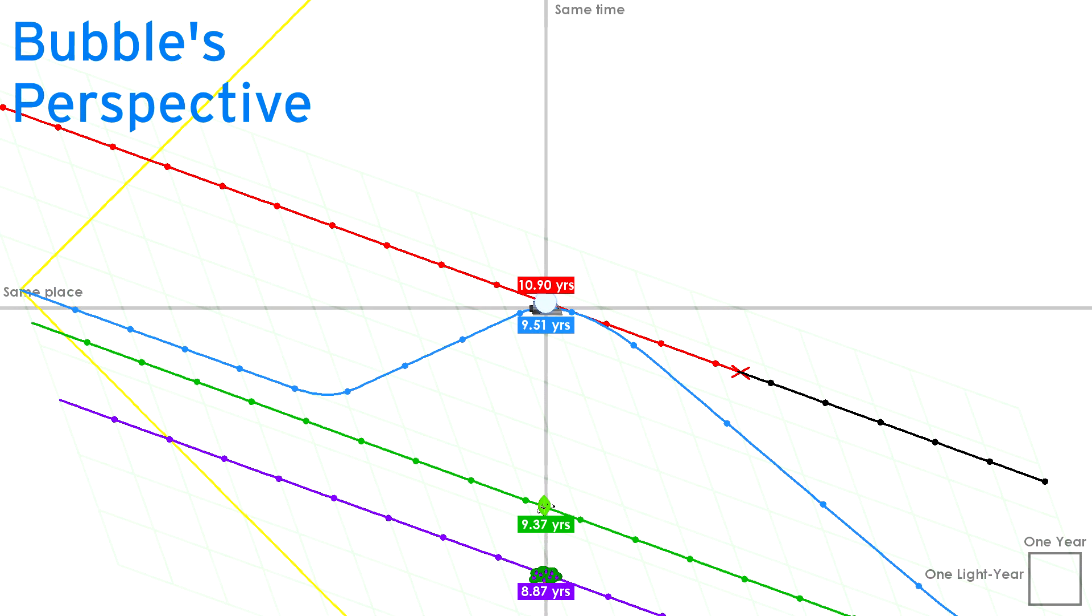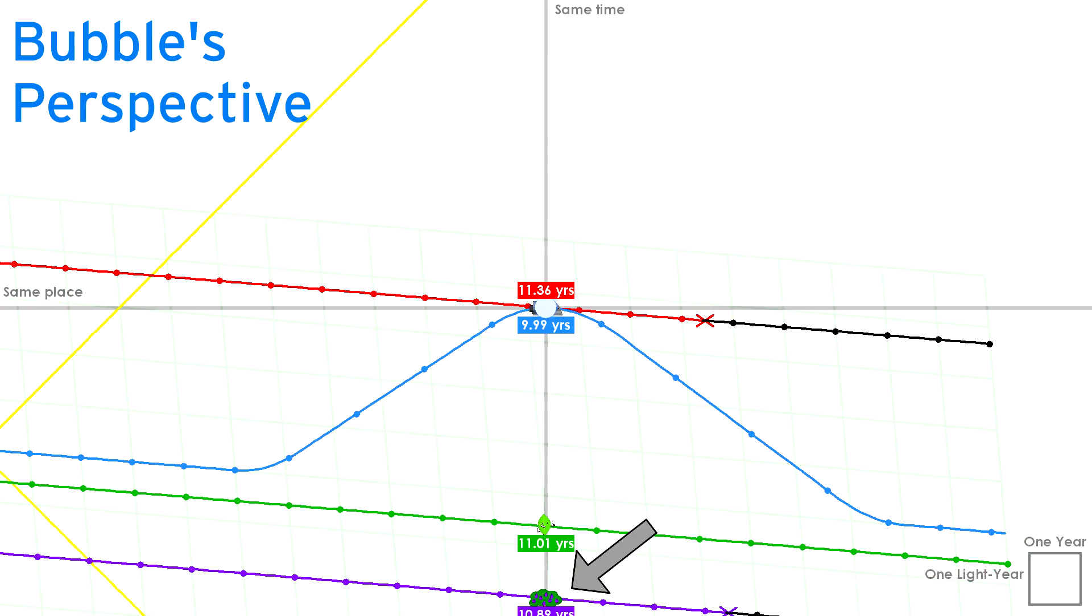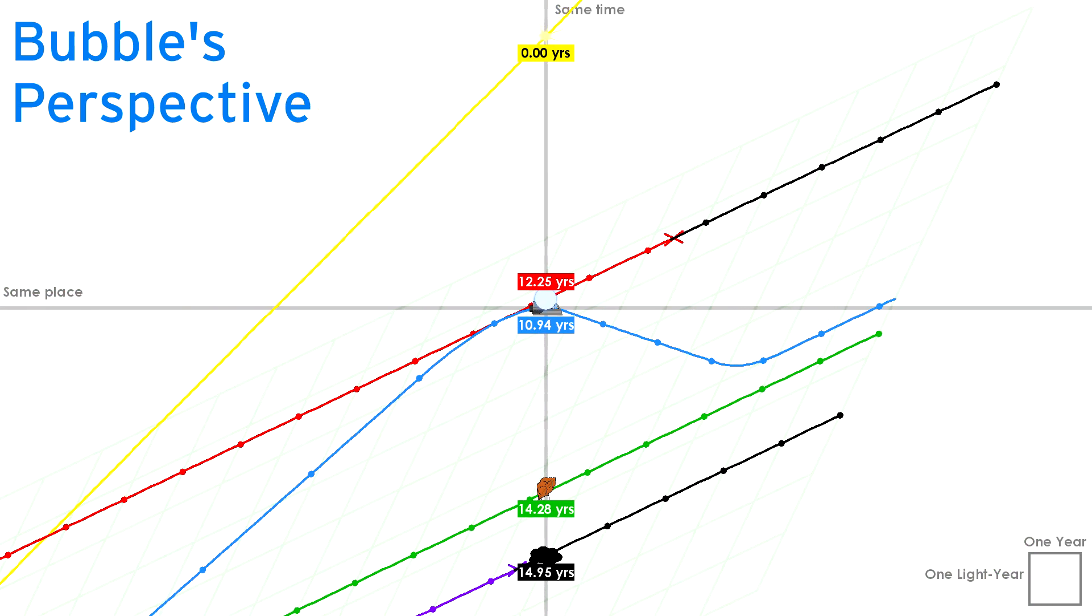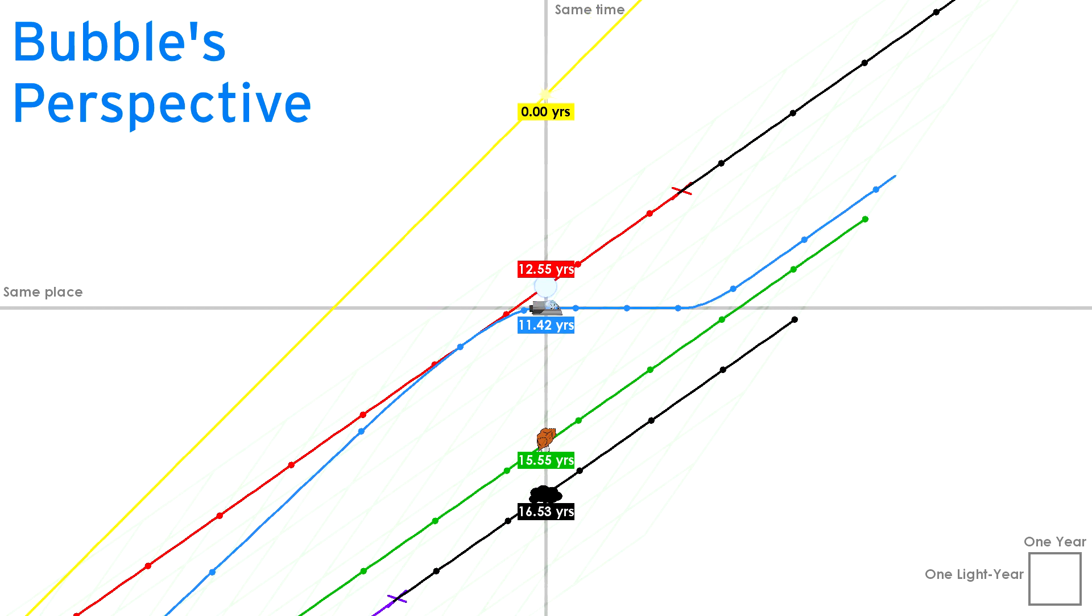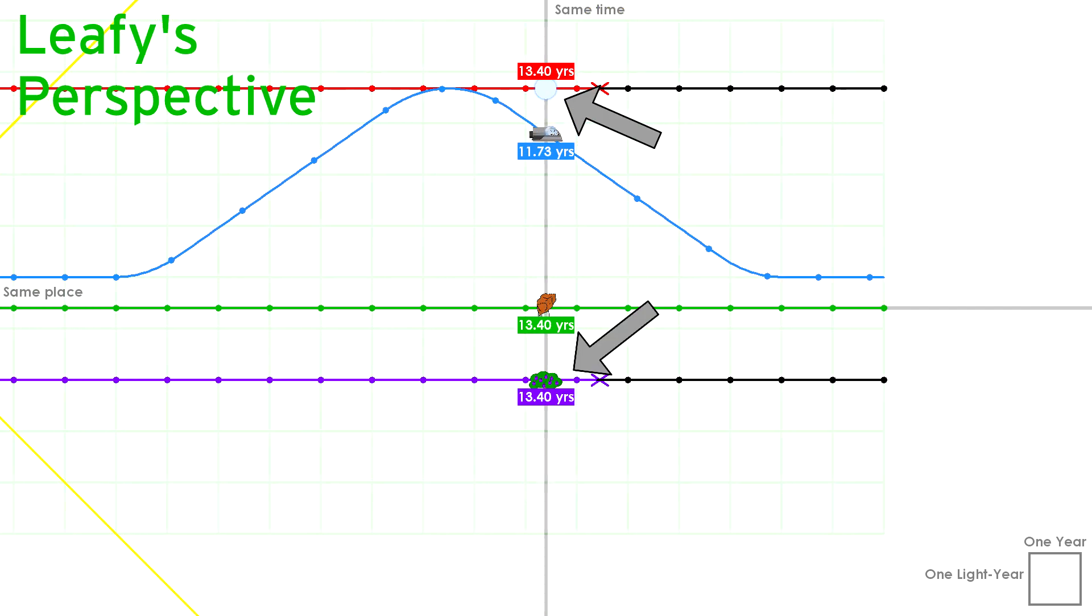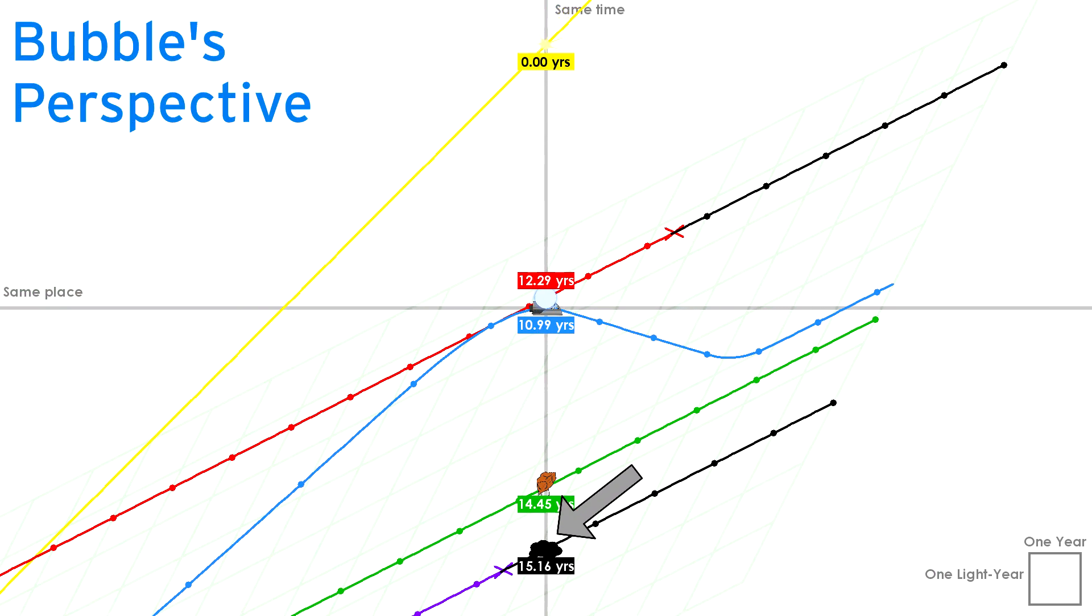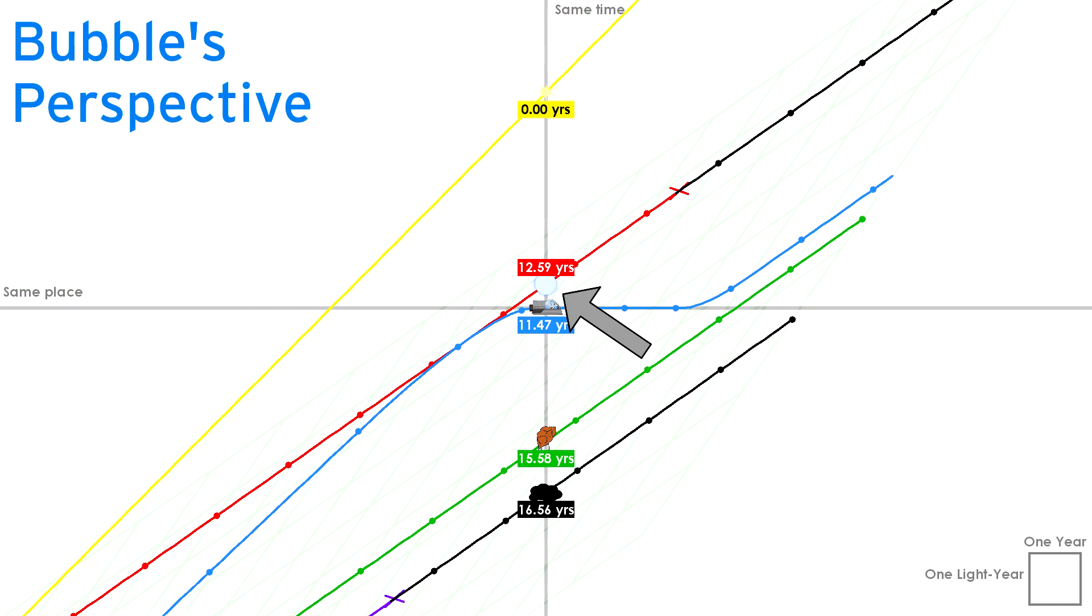Back to Bubble's perspective now. More distant objects, like Yoyoland, age even faster, so much so that Yoyoland blows up before Ice Cube's star. Let that sink in. From Leafy's perspective, the two exploded simultaneously. But from Bubble's perspective, Yoyoland explodes years before Ice Cube's star even senses any trouble.